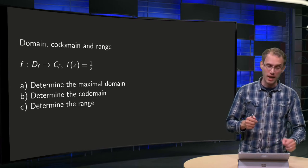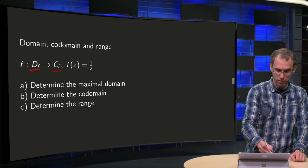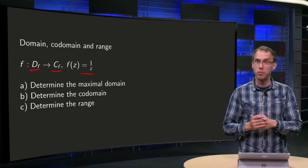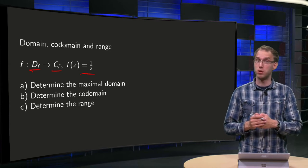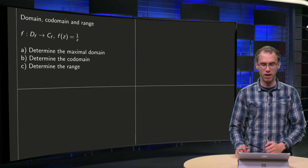Let's take a look at an example. We have f from the domain to the codomain, f(z) equals 1 over z. First question: determine the maximal domain. Second question: determine the codomain of the function. And third question: determine the range of this function f.